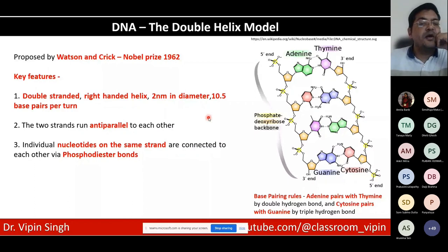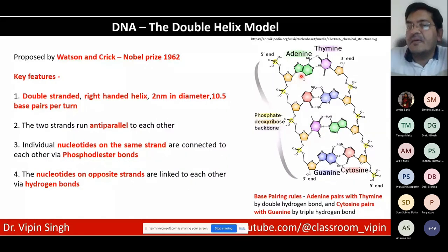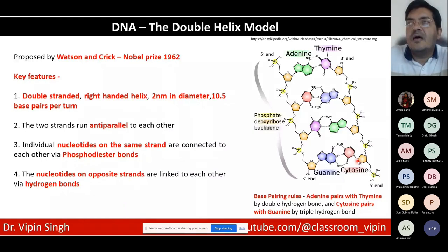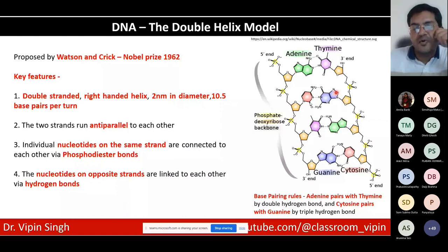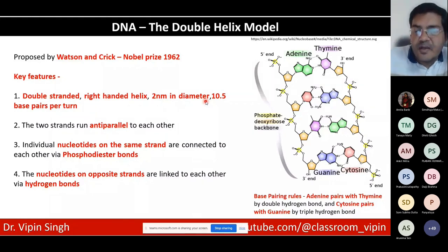The base complementarity rule is clear: adenine pairs with thymine, cytosine pairs with guanine. If you have the sequence of one strand, the other strand can be derived. The complementary strand must be read in the opposite direction since genes are always read 5' to 3'. Sequence databases only store the top strand; if your gene is on the bottom strand, you must perform a reverse complement to retrieve the correct sequence.